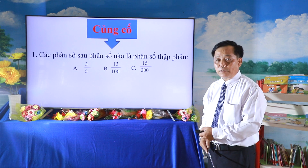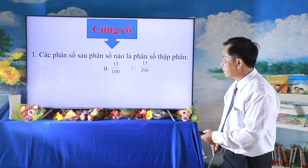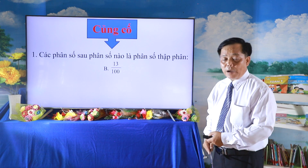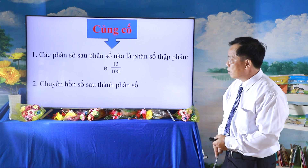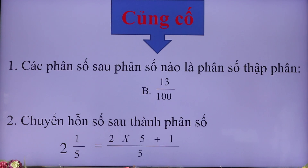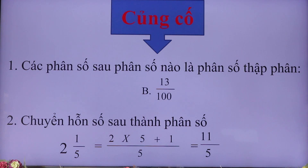Đó là kết quả câu B: 13/100. Chúc mừng các em có kết quả B. Qua câu số 2: chuyển hỗn số sau thành phân số: 2 và 1/5. Ta lấy phần nguyên nhân với mẫu số rồi cộng tử số, mẫu số giữ nguyên. Ta được kết quả là 11/5. Các em đều làm đúng kết quả như trên bảng. Thầy chúc mừng các em.